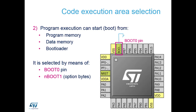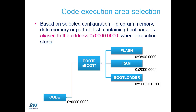Once hardware configurations are loaded, we move to determining where we'll start executing code. As well as the physical boot pin on the device, there is also an option byte which defines which of the three memory areas we execute code from: main flash, RAM, or system memory, which contains the factory pre-programmed bootloaders. One of these three areas gets allocated to address 0x0000, which is the default execution address for our microcontrollers.